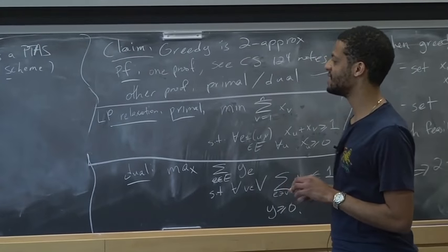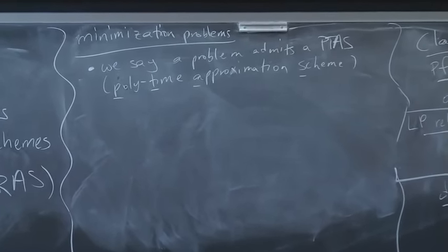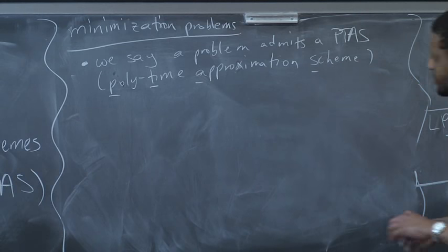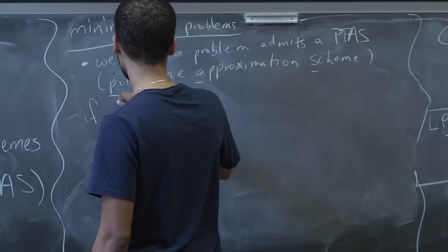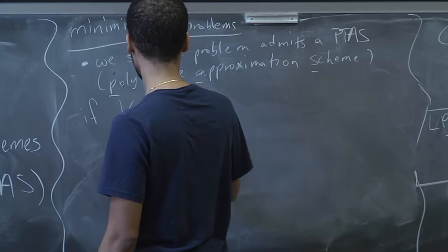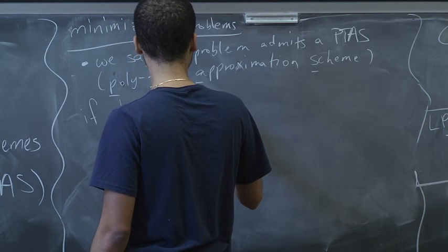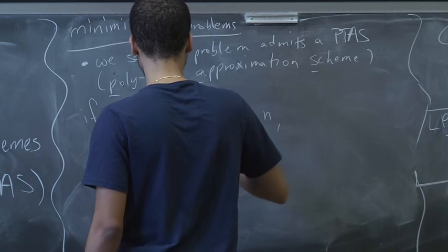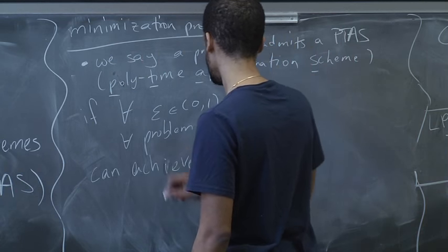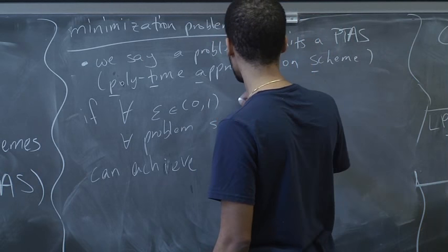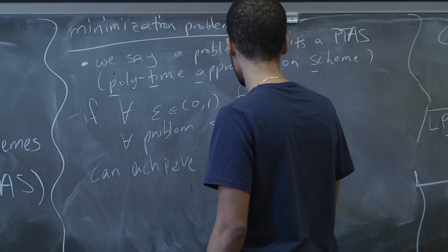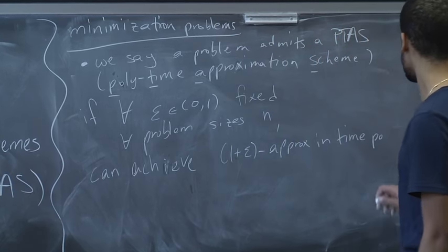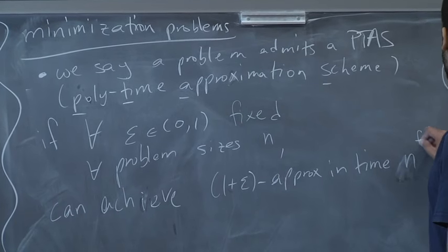Back to PTASes, FPTASes, and FPRASes. We have some minimization problems — set cover, vertex cover, etc. We say a problem admits a PTAS — a polynomial time approximation scheme — if for all epsilon in (0,1) and all problem sizes n, we can achieve a 1 plus epsilon approximation in time poly(n), written as n to the F of 1 over epsilon.